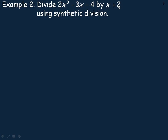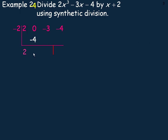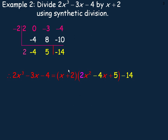In example two, we're dividing a cubic polynomial by x plus 2. Notice there's no x² term here, so you have to account for that — include a 0 as its coefficient. Bring the leading 2 down, multiply by negative 2 to get negative 4. 0 plus negative 4 is negative 4. Negative 4 times negative 2 is 8; add to negative 3 to get 5. Then 5 times negative 2 is negative 10; negative 4 plus negative 10 is negative 14 — that's the remainder. The restriction is x cannot equal negative 2, and the division statement shows the original polynomial equals x plus 2 times 2x² minus 4x plus 5, plus the remainder negative 14.